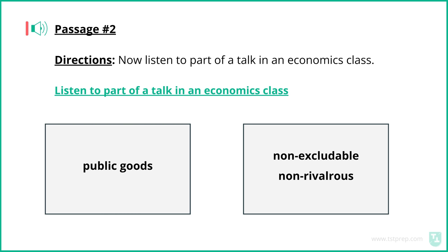Great, I was just going to get to that. So, besides being hard to separate, economists usually classify something as a public good if it is both non-excludable and non-rivalrous. I know these terms are quite a mouthful, but they are fairly simple ideas. Let's start with non-excludable. Non-excludable means that it is either expensive or nearly impossible to exclude someone from using the good.